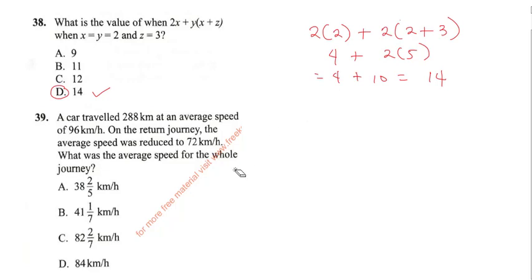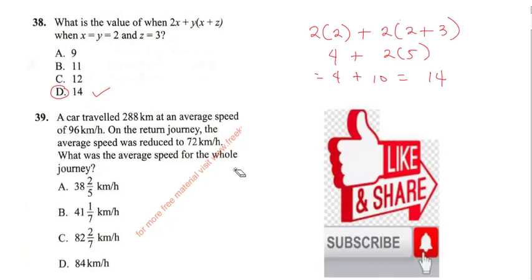Now question 39 says a car traveled 288 kilometer at an average speed of 96 kilometer per hour. On the return journey the average speed was reduced to 72 kilometer per hour. What was the average speed for the whole journey?